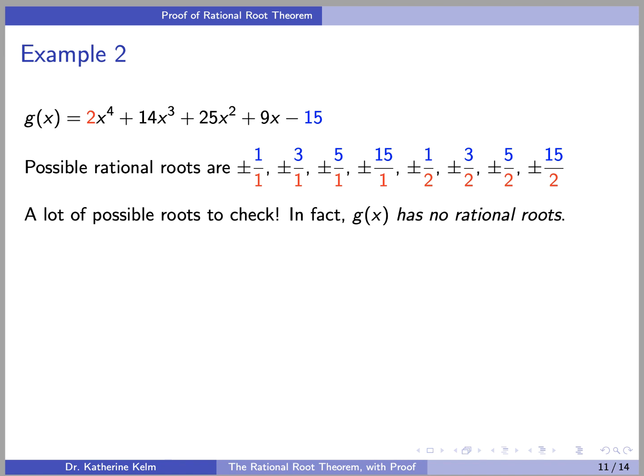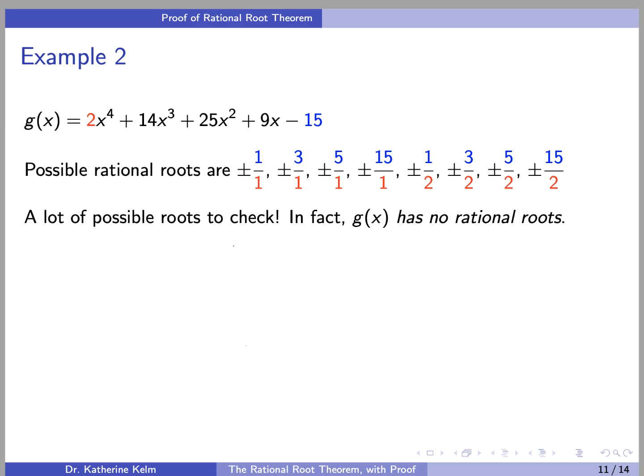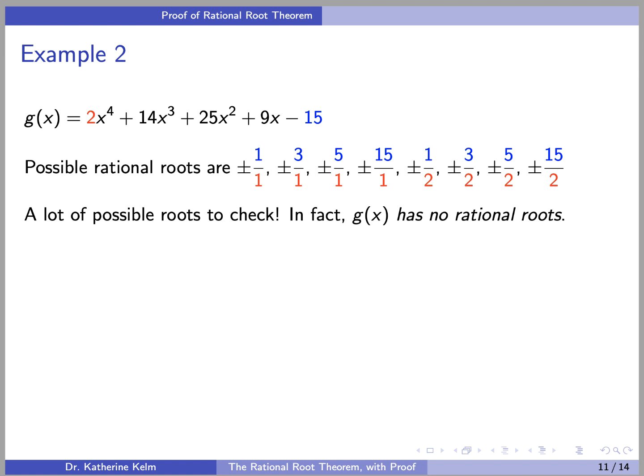As another example, consider g(x) = 2x⁴ + 14x³ + 25x² + 9x - 15. This is the motivating example mentioned at the beginning of this video. The possible rational roots using the Rational Root Theorem are ±1, ±3, ±5, ±15, ±½, ±3/2, ±5/2, and ±15/2. That's a lot of possible roots to check. And in fact, you could go through the entire list and find that g(x) has no rational roots. So the Rational Root Theorem does have its limitations.